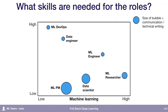So what are the skills that you need to actually succeed in each of these roles? On this chart, I plotted the level of machine learning knowledge and skill that you need along the x-axis, and along the y-axis is the level of engineering skill that you need. The size of the bubble represents how much communication and technical writing skill is usually required.